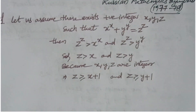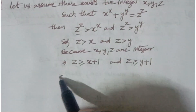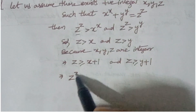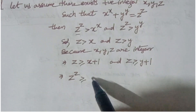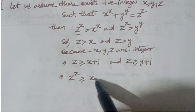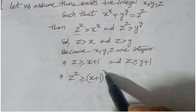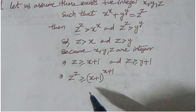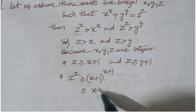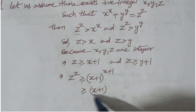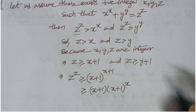So from this, z is greater than or equal to x plus 1, and z is greater than or equal to y plus 1. Therefore, z^z is greater than or equal to (x+1)^z, which is greater than or equal to (x+1)^(x+1).